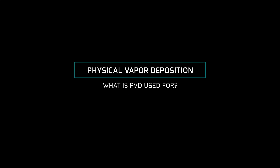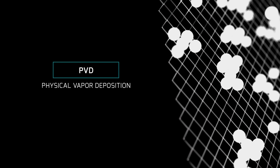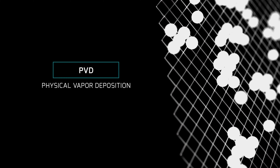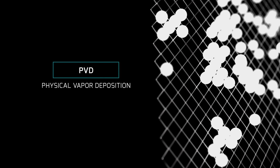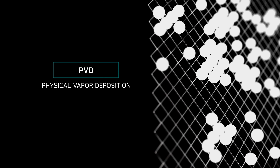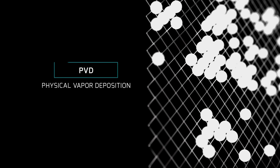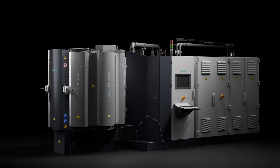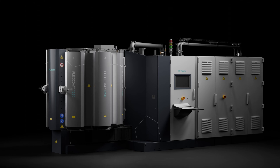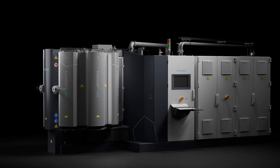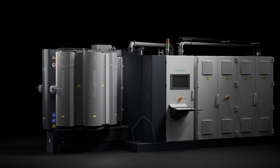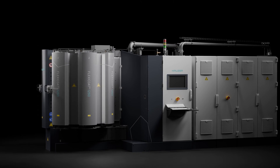Physical Vapor Deposition. PVD, or physical vapor deposition, is a technique used to create thin films or coatings on various materials. A metal or other solid material is vaporized by physical means and then deposited onto the substrate material.